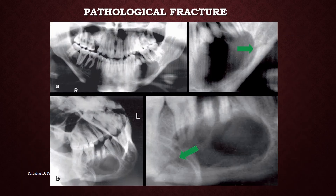Lastly, pathologic fractures is a term used for fractures that occur due to a large cystic lesion — for example, a lesion extending to the lower border of the mandible, fracturing the jaw because of the extent of the cystic area involved.